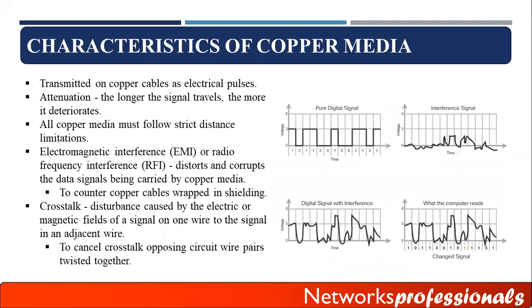Here are some characteristics of copper media. If you are using coaxial or twisted pair, you are using copper media. If you are using fiber optic, you are using glass media. One key characteristic is that data is transmitted on copper cable as electric pulses — when using copper media, our data travels in the form of electric pulses.